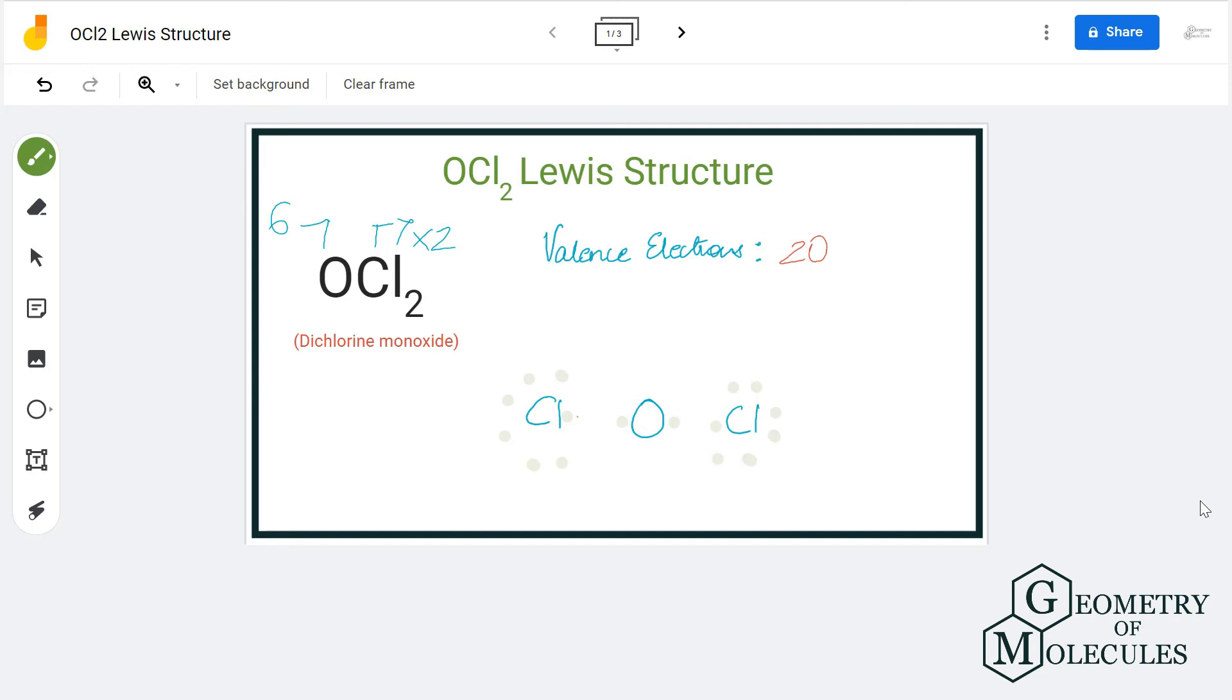Now we're left with four valence electrons, which we place on the oxygen atom. You can see that both chlorine atoms have complete octets, with eight valence electrons in their outer shells.